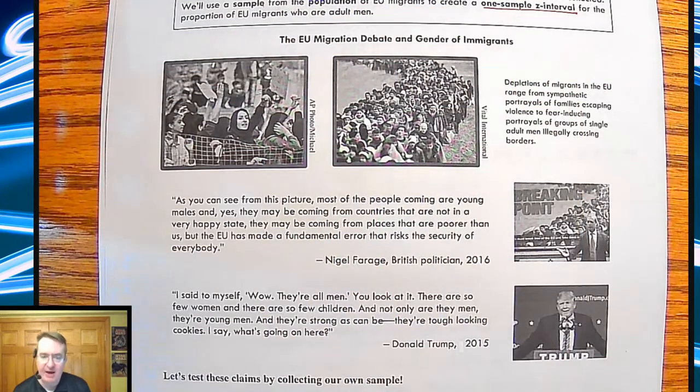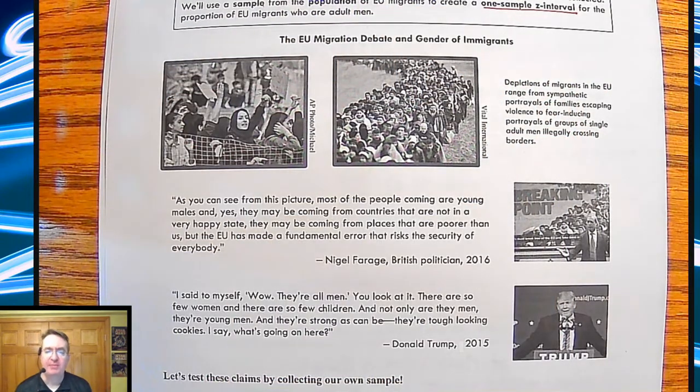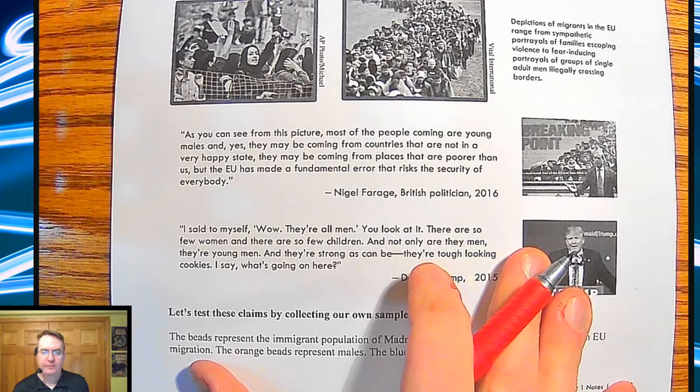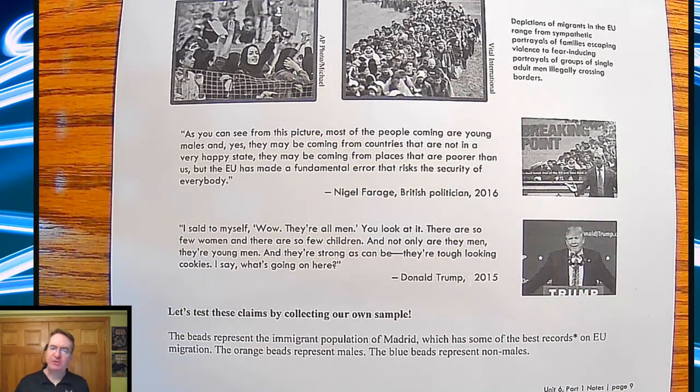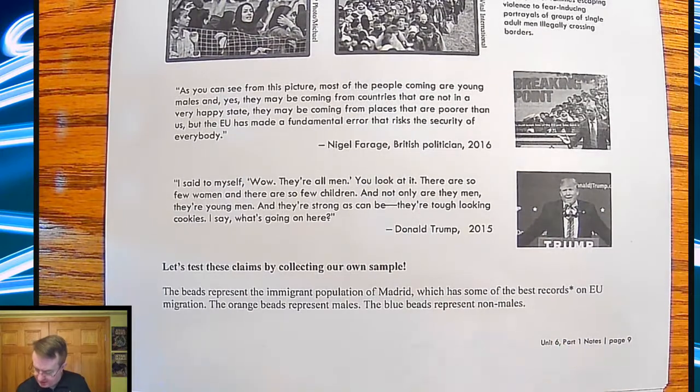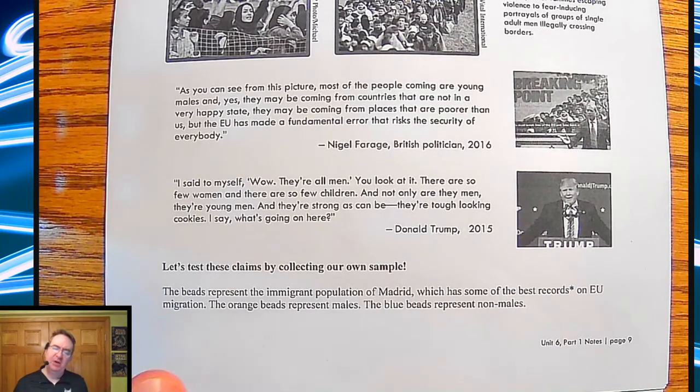So down through here, they give you some of the background here in terms of the debate for gender of immigrants. You can see right here some of the quotes of some of the things that were saying on some of the more conservative sides of things. And so what we ended up doing down here is that the original situation that if you were in the classroom, we would have a big jar full of beads, there would be orange and blue. And then what would end up happening is the orange beads would end up representing males out of the immigrant population who are coming into a country, in this case Spain, and also blue beads representing non-males, meaning women and children.